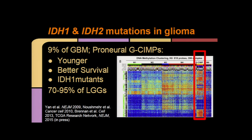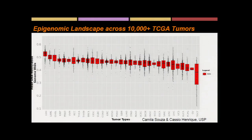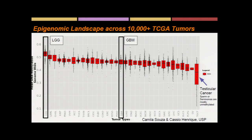G-SIMP has the highest methylation pattern among all high-grade GBMs, is generally defined by younger age of onset, better survival, and is associated with IDH1 mutation. We've also shown this is highly represented among the lower grade gliomas. To give a bird's-eye view of the epigenome landscape across all TCGA tumors, we pulled down 10,000-plus samples across 34 different tumor types, calculated the average mean methylation level for each sample, and plotted it on a box plot. LGGs have the highest overall methylation level across all tumor types, whereas testicular cancer — a positive control — has the lowest methylation level, as expected since seminomas are mostly unmethylated.